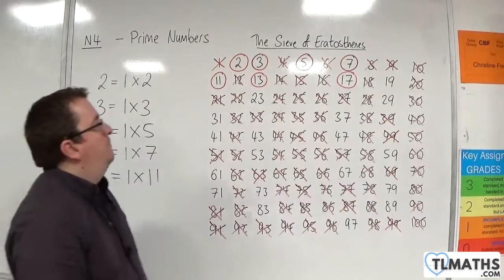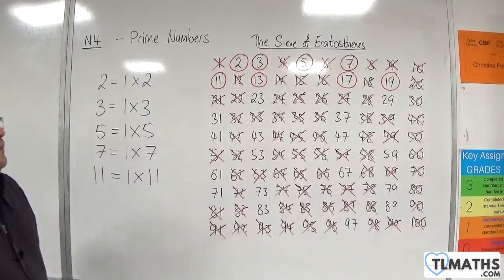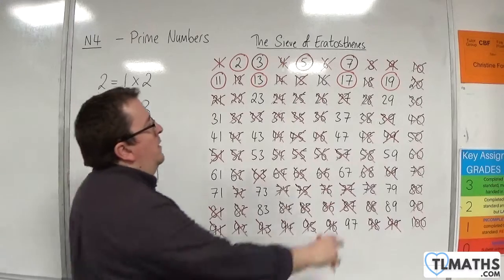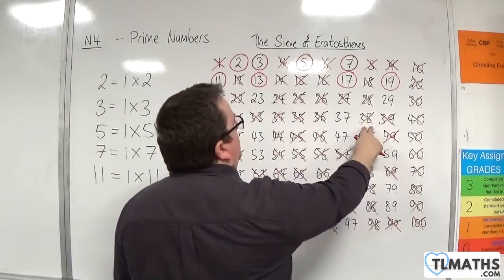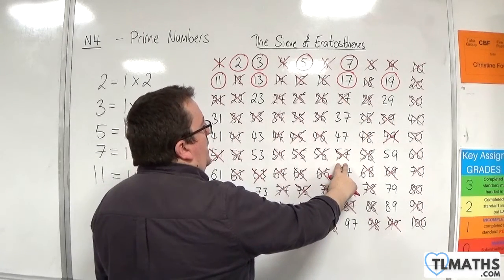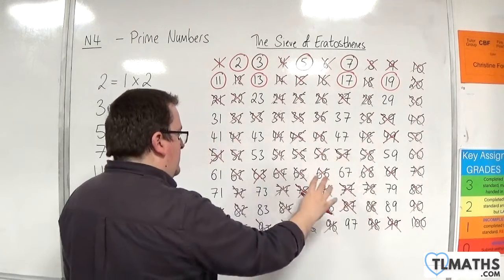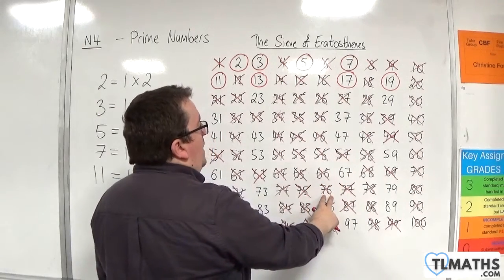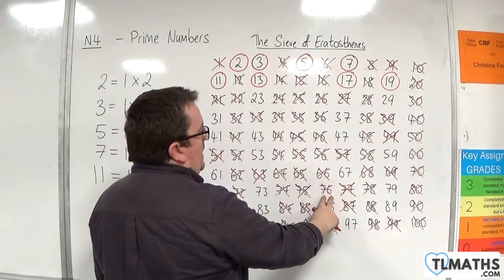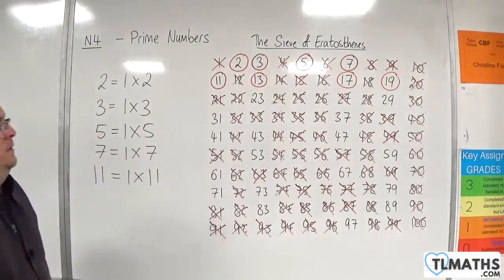Next one, nineteen. So nineteen must be prime. So nineteen, then thirty-eight, then we're going to have fifty-seven, then we would have seventy-six, then we would have ninety-five. And gone.